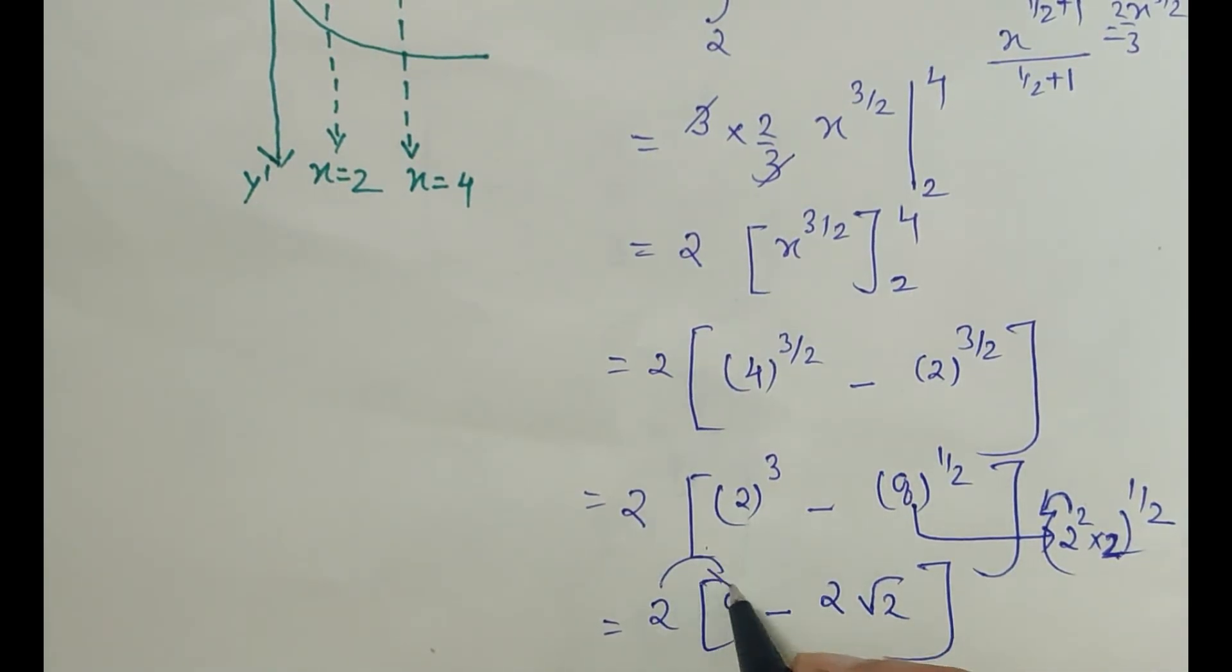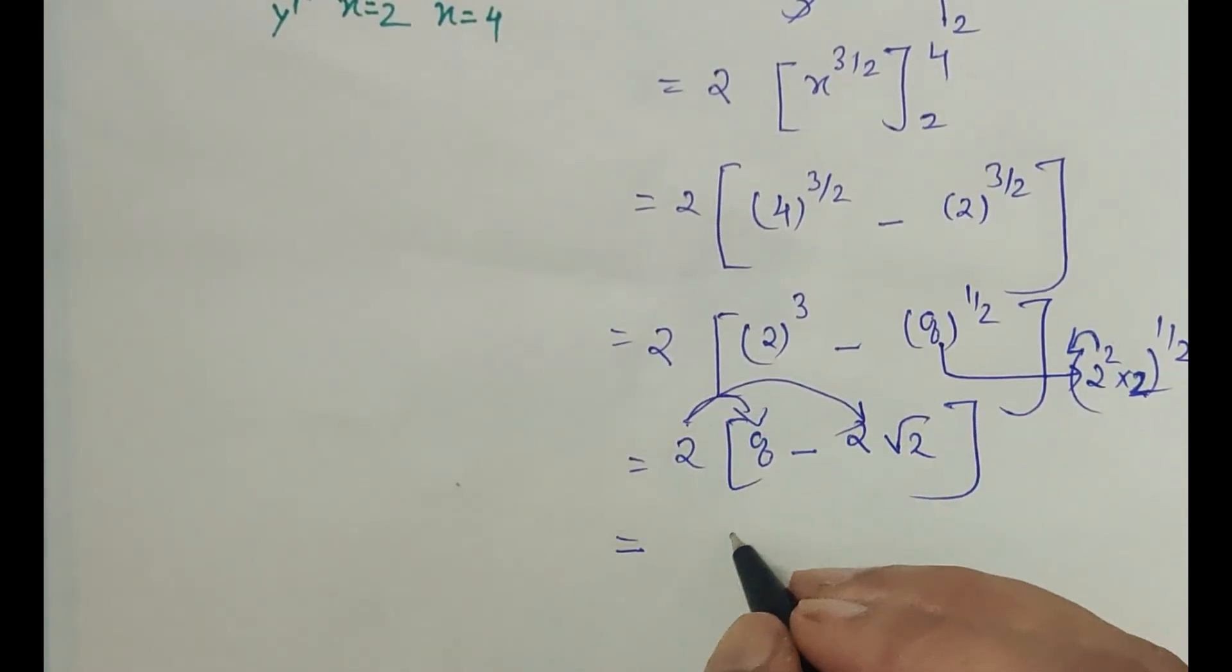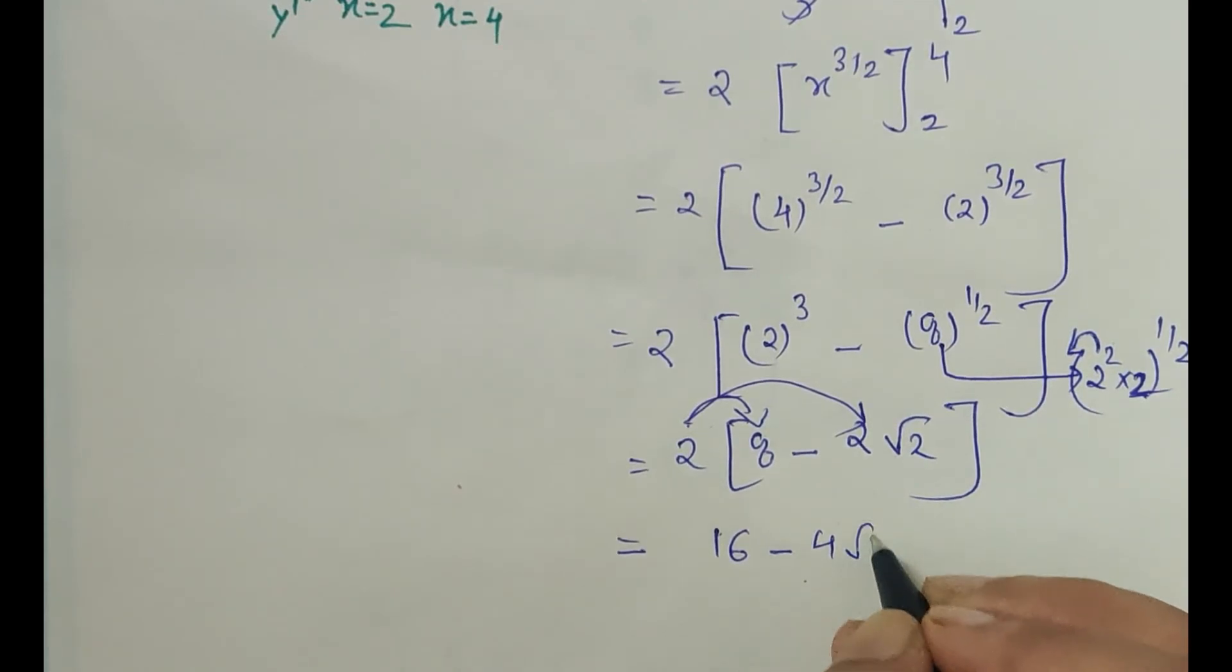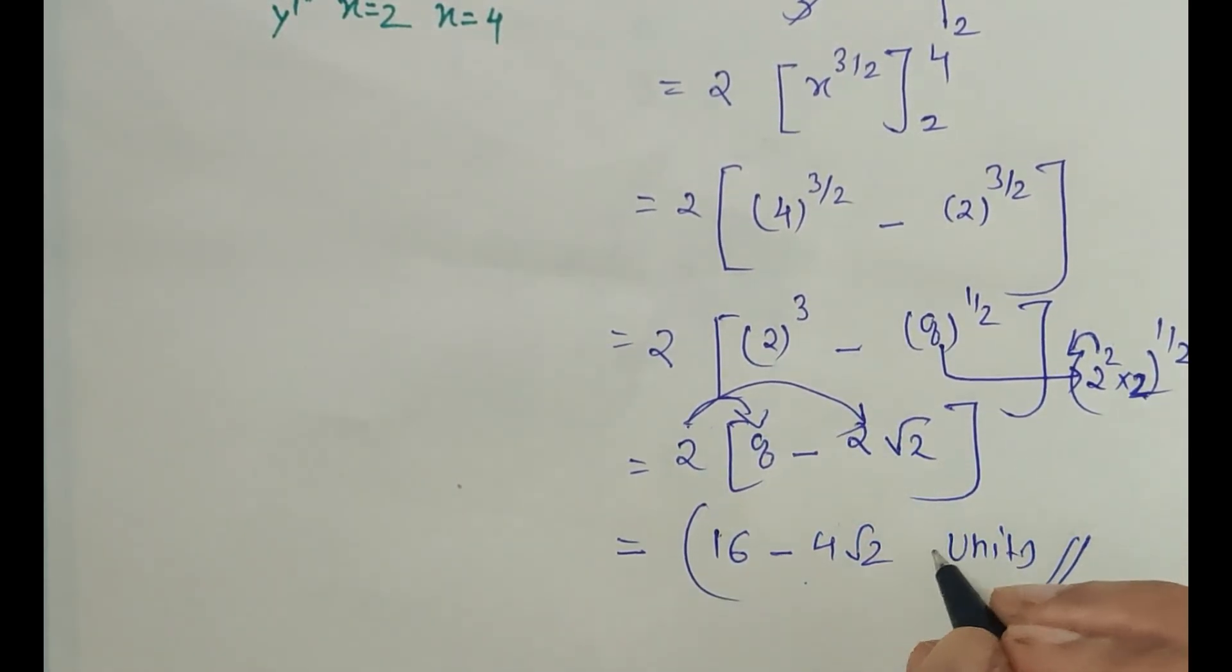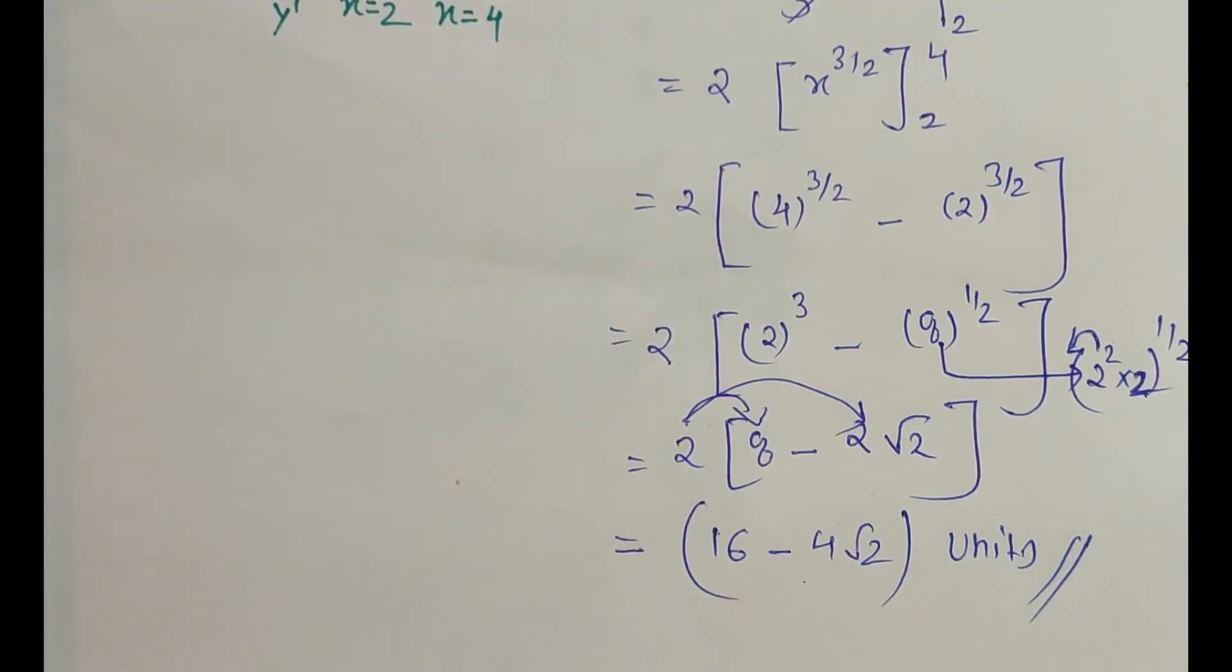Now let us multiply this 2 inside the bracket terms. So we get 2(8 - 2√2) square units. So this is the area of the required problem. Thank you.